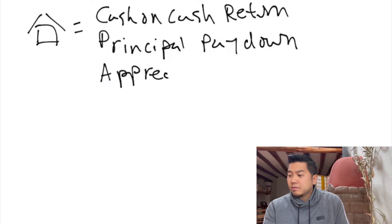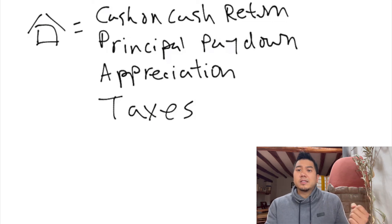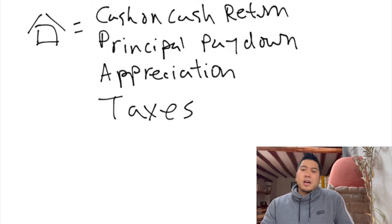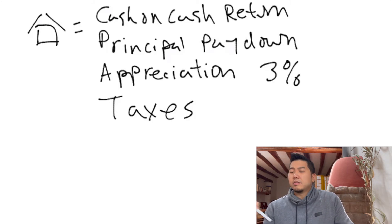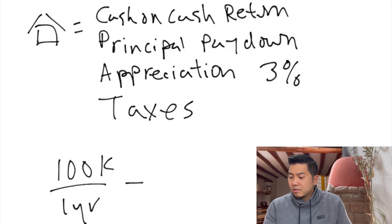We're not even going to talk about taxes, but if you made $50,000 in your rental property versus making $50,000 working as an accountant, who do you think keeps more of that money? This is why real estate is just so powerful. To calculate appreciation, let's take the national average and even low-ball that number at 3% per year. That means if a house is worth $100,000 this year, in year two it's going to be worth $103,000.